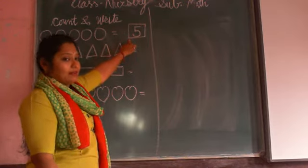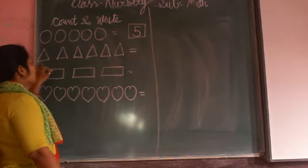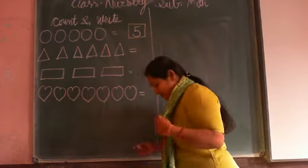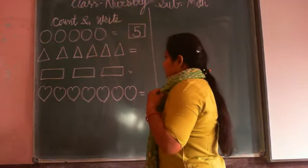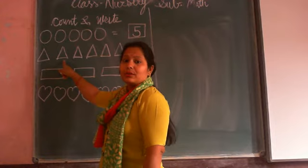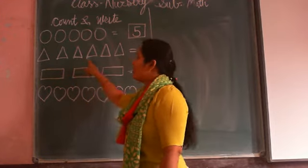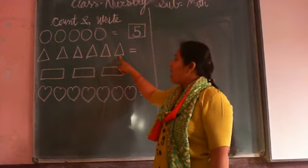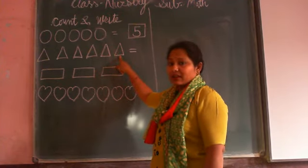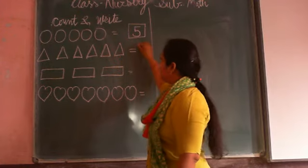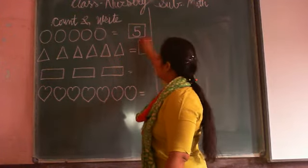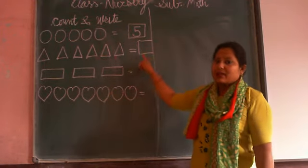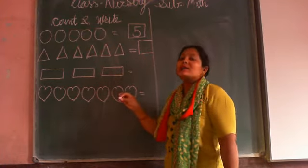Now next, how many triangles are here? Count it. One, two, three, four, five, six. How many triangles? Six triangles. So here we write which number? Number six, because six triangles are here. So here we write number six.